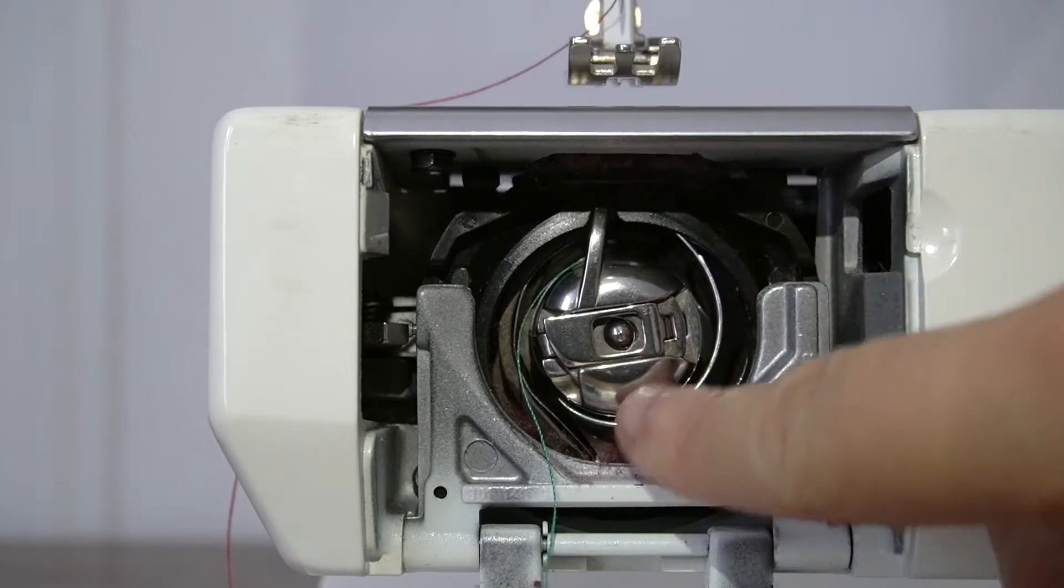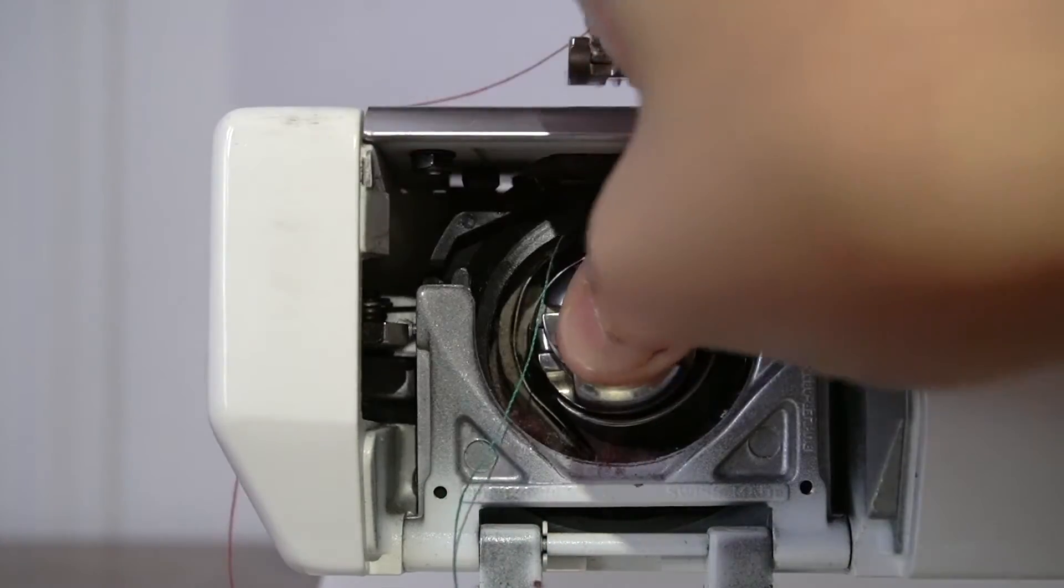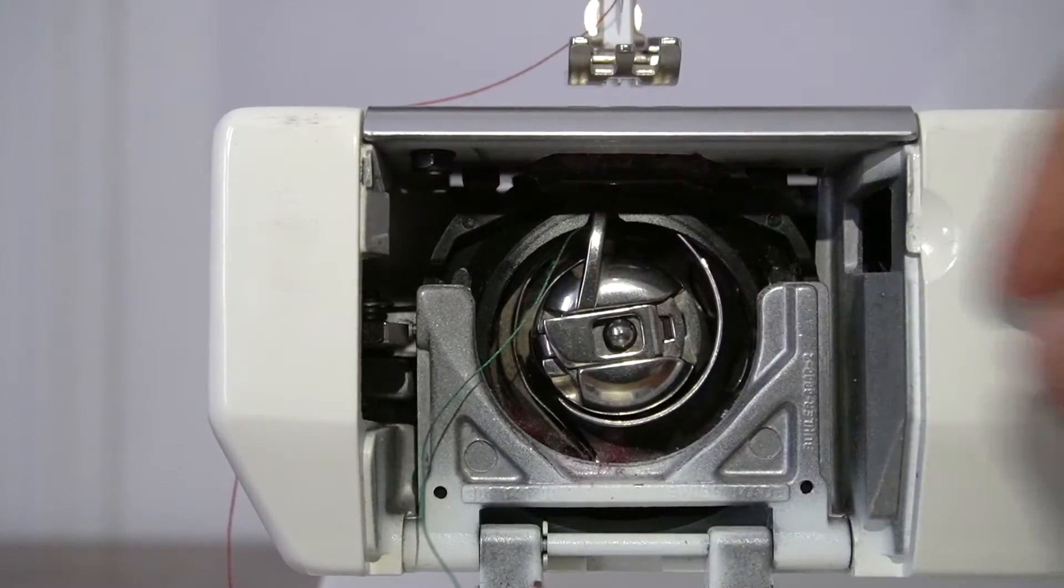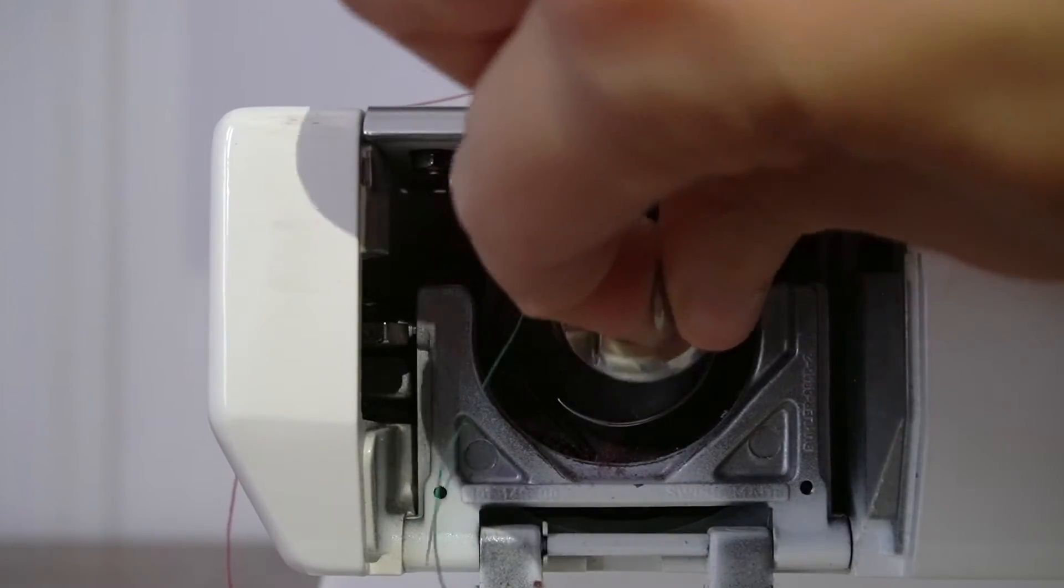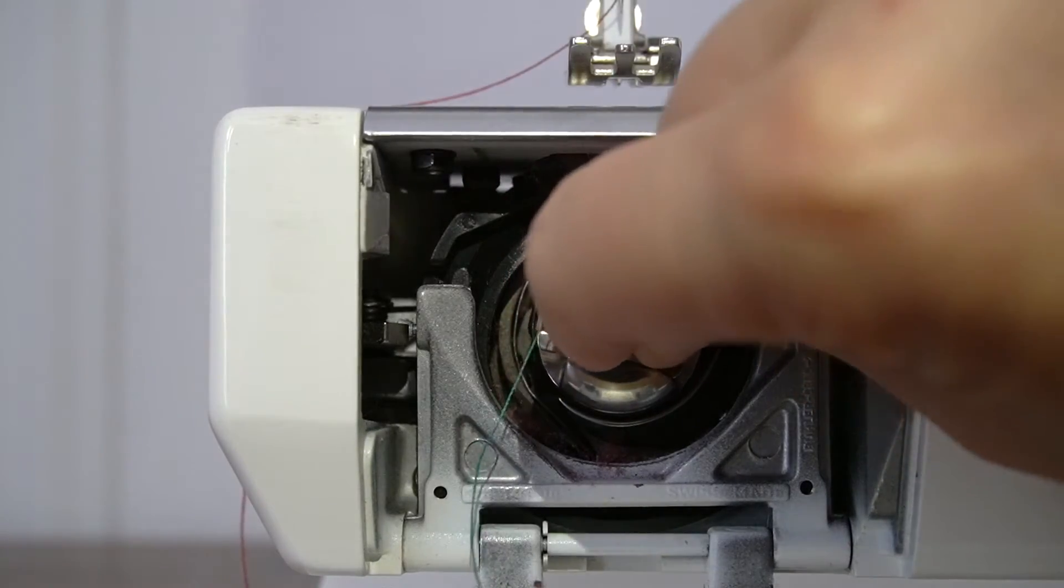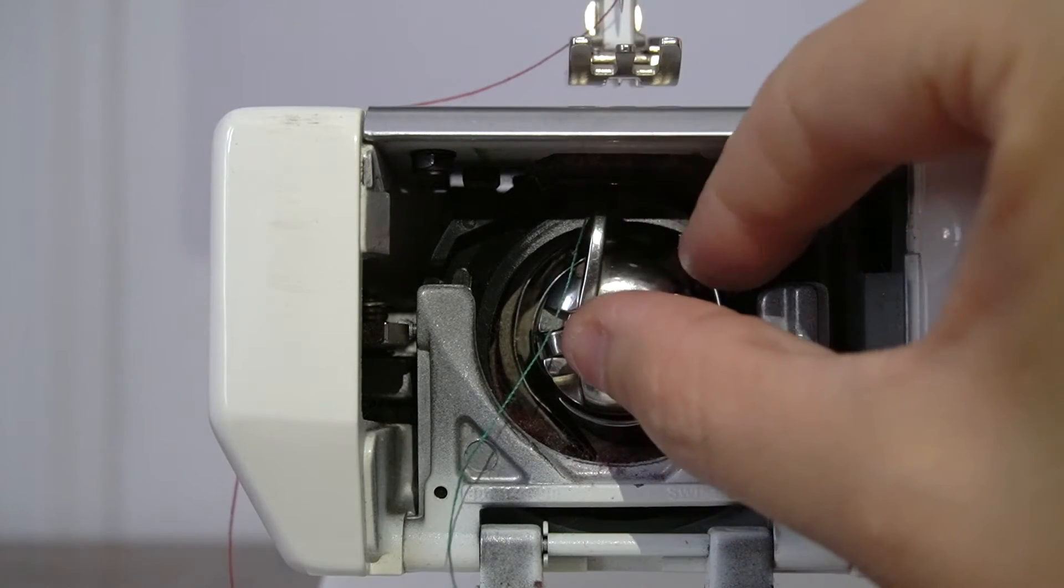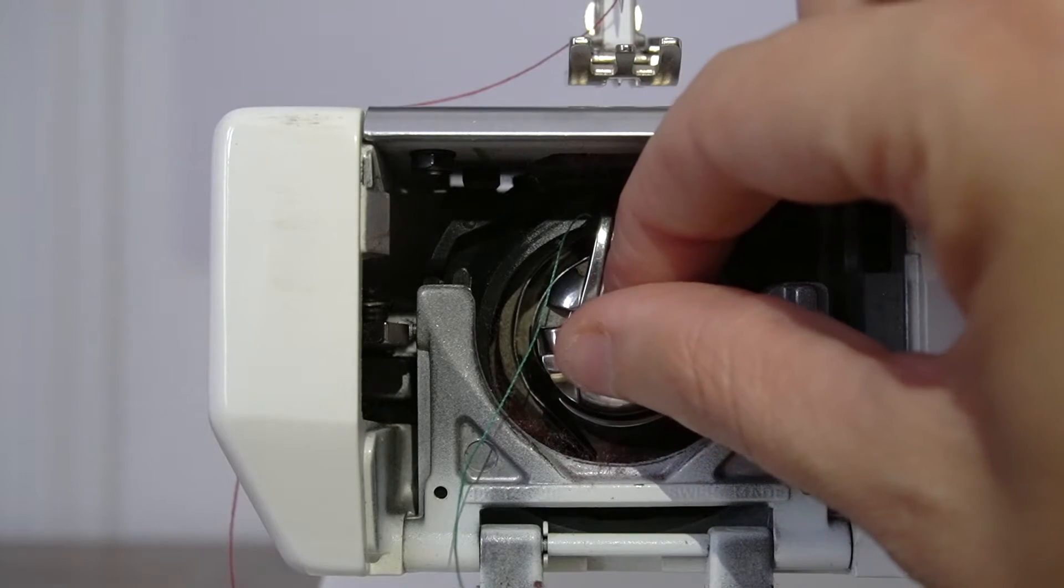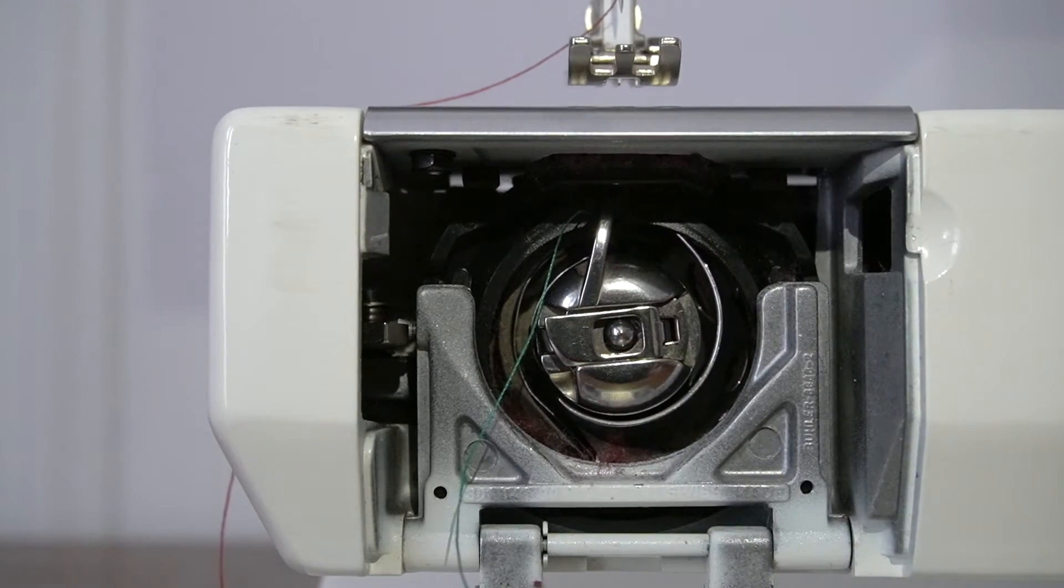It will only lock in there if you pull this latch open, push it in, and then release it. Now it is in there all solid. I cannot take this out unless I pull the latch to then pull it out. And it's the same for getting it in and out. So you'll pull this latch open, stick that little metal piece up into the open area where it's designed to go into. The latch is open, release the latch, and now it is secure into the bobbin chamber.